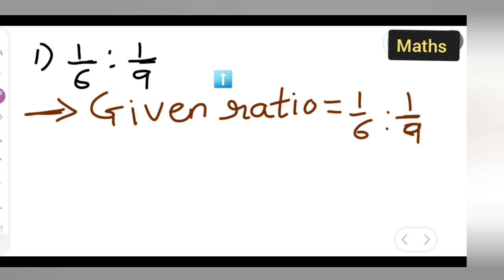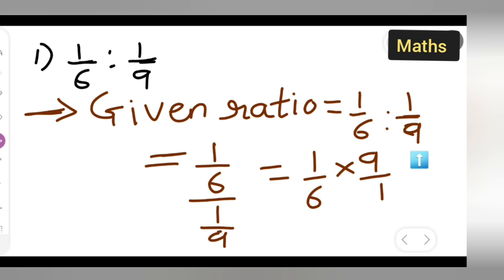Next step: write down 1 upon 6 multiplied by. Okay, 1 upon 6 ratio means you have to divide 1 upon 9. Now this is equal to 1 upon 6 multiplied by reciprocal 9 upon 1. So 1 upon 6 divide by 1 upon 9. This is equal to 1 upon 6 multiplied by the reciprocal of this.